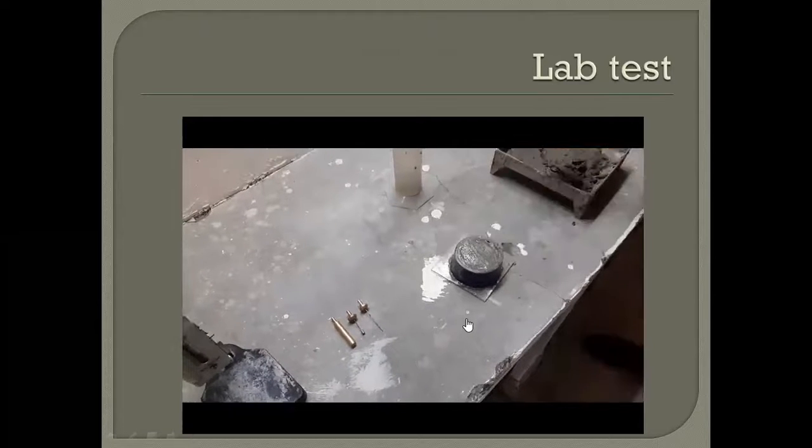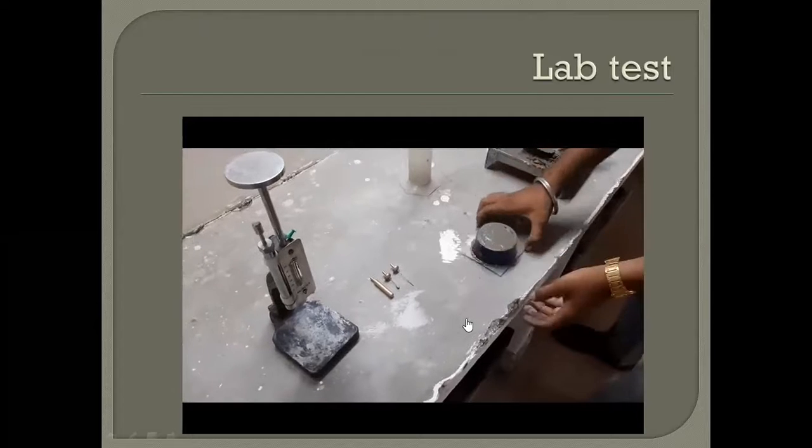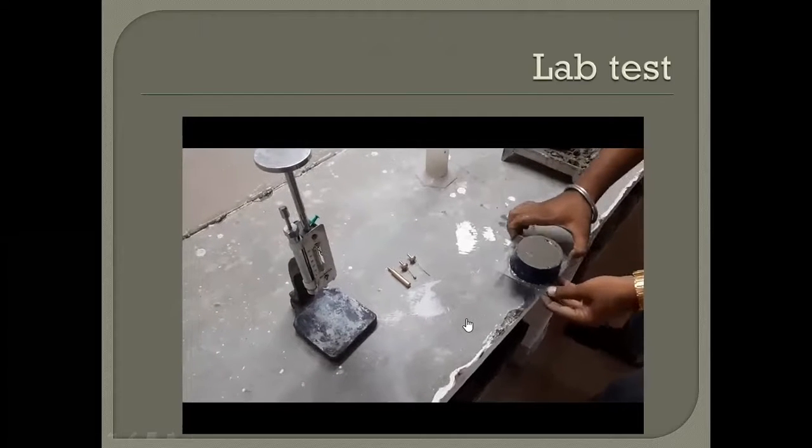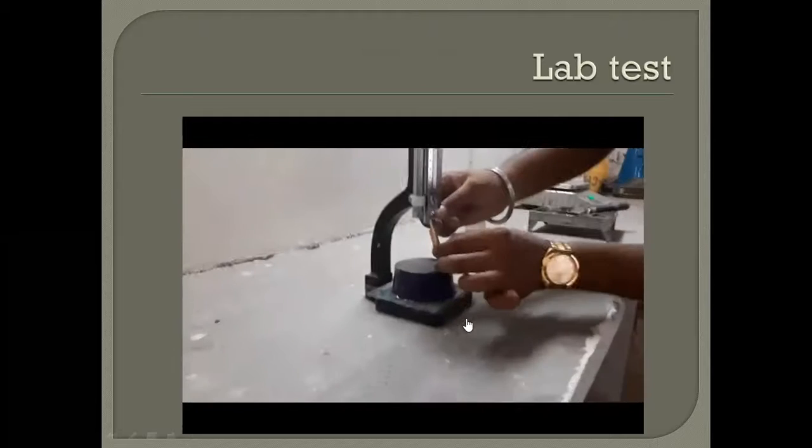So after filling the paste in the mold, we need to place it below the movable rod and we have to apply the plunger. Then we have to release the pin.